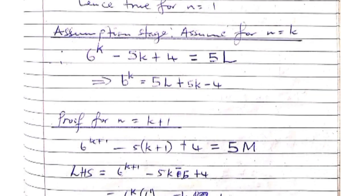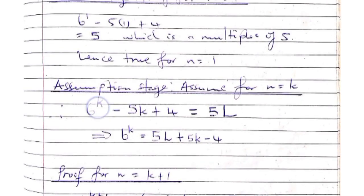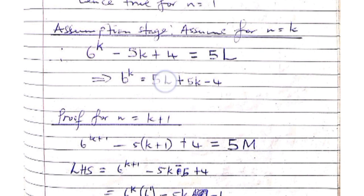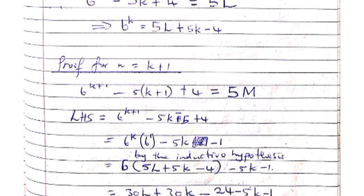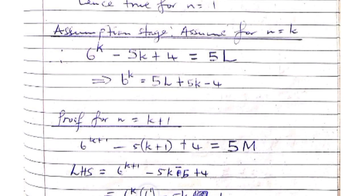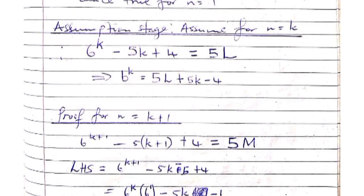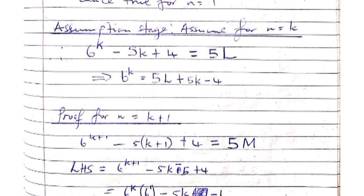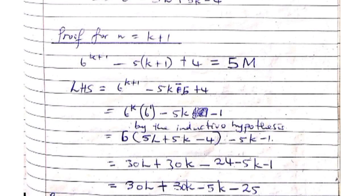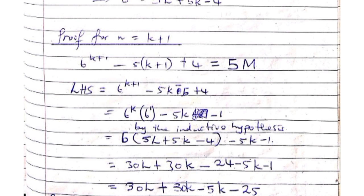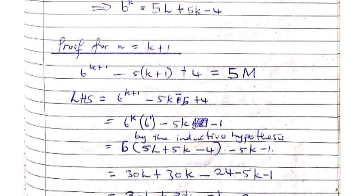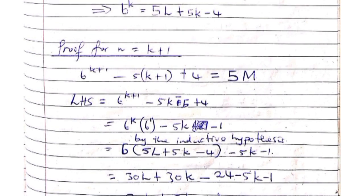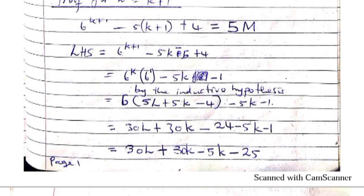Here we have 6 to the k, which is exactly what we have on the left-hand side of the assumption stage. So we take that and substitute it where there is 6 to the k. We get 6 multiplied by 5l plus 5k minus 4 — which represents 6 to the k — then minus 5k minus 1. We expand this bracket to get 30l plus 30k minus 24 minus 5k minus 1. Doing some simplification and grouping like terms, 30k minus 5k gives us 25k, and we get minus 25.